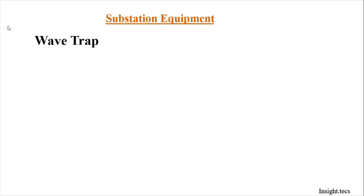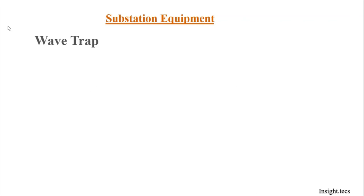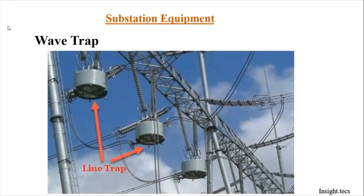Up until now we have seen power transmission equipments. The next two equipments are wave trap and CC or CVT. The wave trap, also called a line trap, is a device which prevents transmission of high frequency carrier signals and allows only the power frequency — either 50 Hz or 60 Hz. Wave trap is helpful for power carrier communication and plays a major role in the line protection system. It looks like a cylinder and is placed just after the lightning arrestor in the substation.